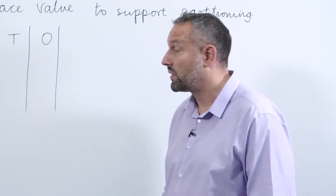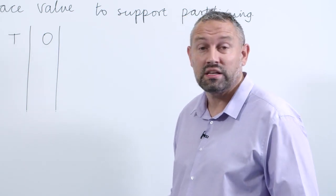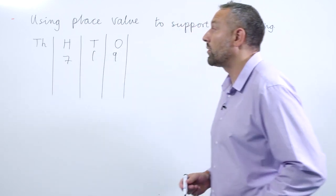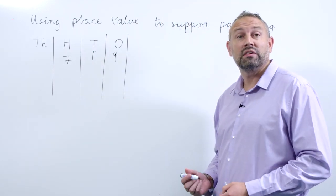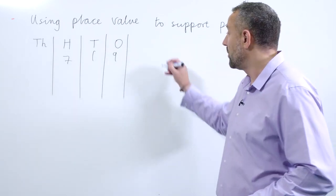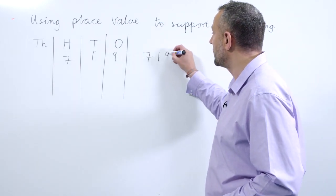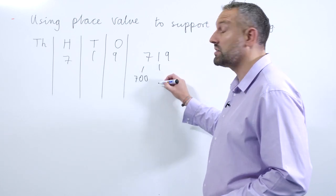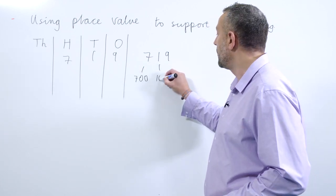Let's take the number 719. I can put that into my place value columns and it helps the children so that they can really see the value of each digit. We can then write 719 like this and they can see that 719 is made up of seven hundreds, one ten, and nine ones.